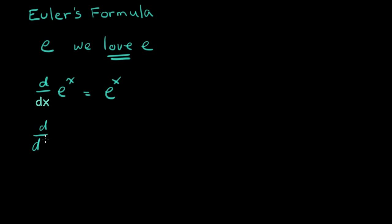And d/dt of e to the ax, so where a is anything, equals a times e to the ax. And so the property is that when you take a derivative of the function, the same function comes out. Or if you take a derivative of the function, a scaled version of the same function comes out.